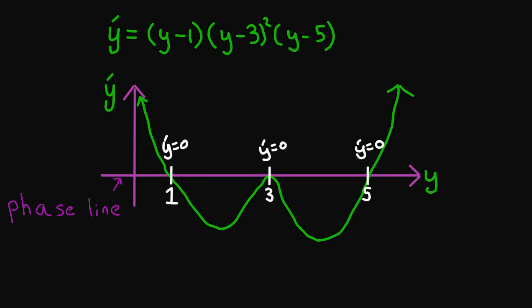The expression on the right has zeros at y equal to 1, 3, and 5. Let's mark these on the graph. At these points y prime is equal to 0. You can see this either by plugging in the constant function y of t equal to 1 into the differential equation or just by looking at the graph. The functions y of t equal to 1, y of t equal to 3, or y of t equal to 5 for all t are our equilibrium solutions to this differential equation.